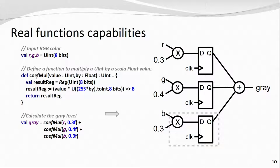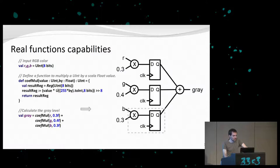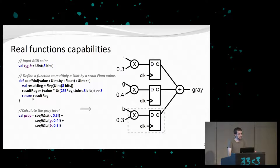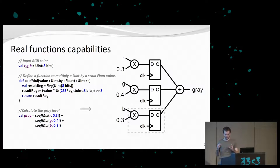In the SpinalHDL implementation, you can define an RGB value, then define a function that takes a hardware unsigned value and an elaboration-time floating-point constant, and returns the output of a flip-flop — defining intermediate registers as Reg of 8 bits, doing fixed-point calculation, and returning the result. You then reuse this function multiple times. In VHDL you have functions, procedures, and tasks, but you can't instantiate arbitrary hardware inside those functions — you are still limited to combinatorial relationships between inputs and outputs, which is not very powerful.